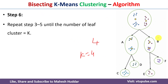This is the complete process of bisecting k-means clustering algorithm — dividing the dataset into the required number of clusters. In another video I have discussed a numerical example on bisecting k-means clustering; the link is given in the description below. I hope the concept of bisecting k-means clustering algorithm is clear. If you liked the video, please like, share, subscribe, and press the bell icon for regular updates. Thank you for watching.